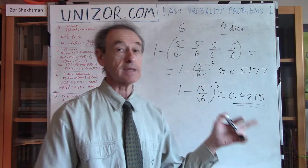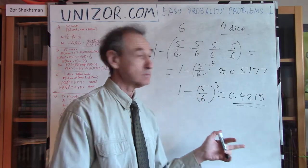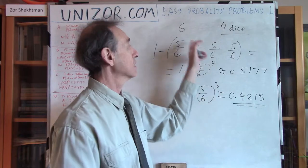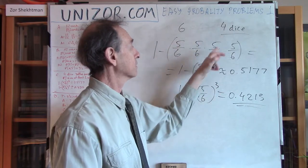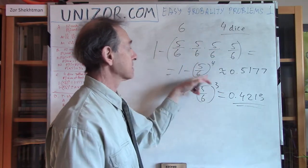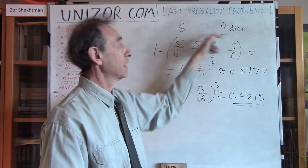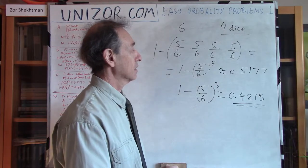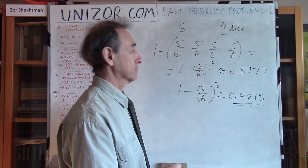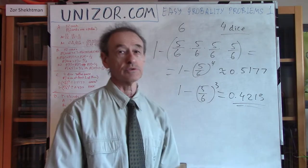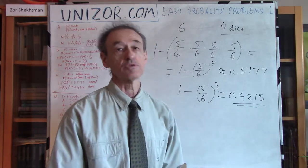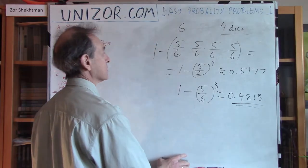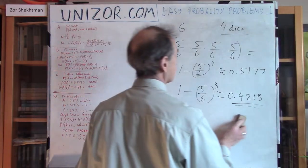Can it be done differently? Yes — you can use combinatorics to find the probability directly rather than using the complement. I just don't want to stop on it here, but if you want, you can send your solution to me and I'll put it on my website.